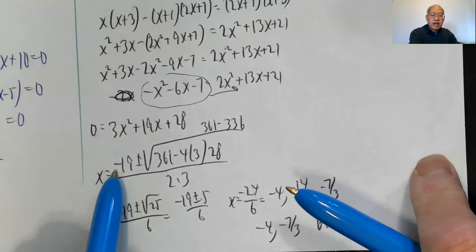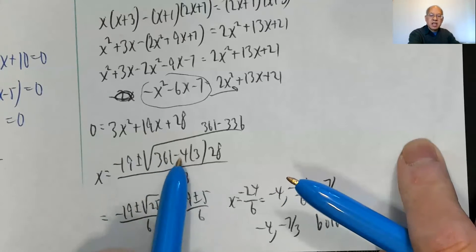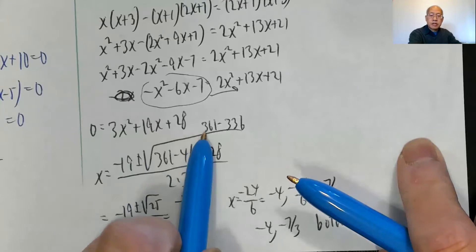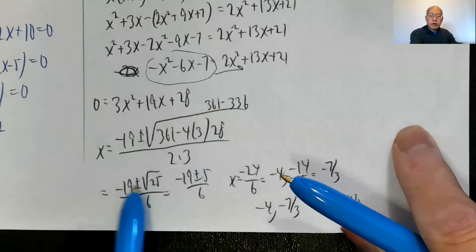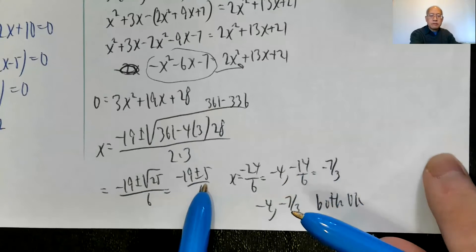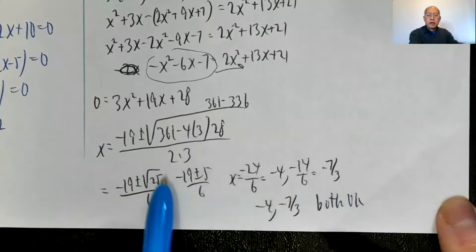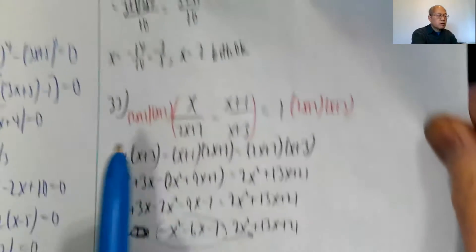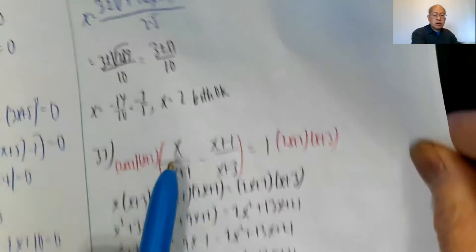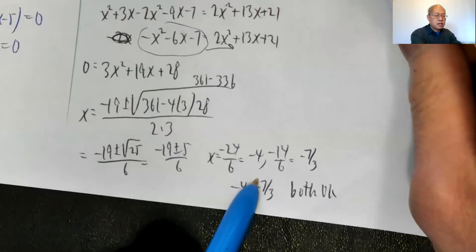Throwing everything to the other side gives zero equals three x squared plus nineteen x plus twenty-eight. Using the quadratic formula: negative b plus or minus the square root of b squared — nineteen squared is three sixty-one — minus four ac, four times three times twenty-eight, which is three thirty-six. That gives three sixty-one minus three thirty-six equals twenty-five, all over two times three, which is six. Square root of twenty-five is five. So negative nineteen minus five is negative twenty-four, divided by six is negative four. Negative nineteen plus five is negative fourteen over six, which reduces to negative seven thirds. Both answers are valid as neither gives zero in the denominator.